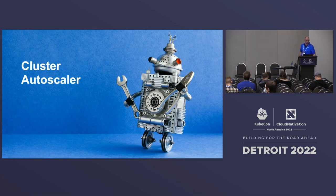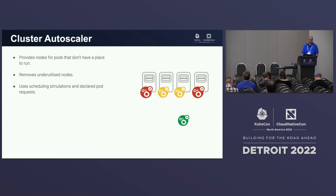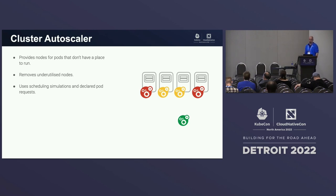The last component I'd like to talk about is Cluster Autoscaler. Cluster Autoscaler ensures that your pods always have a place to run. It provides new nodes for pods that could not be scheduled and removes nodes that are no longer needed. It doesn't use any metrics — it uses pod-declared requests and a lot of scaling simulation to determine what would happen if certain actions were taken.